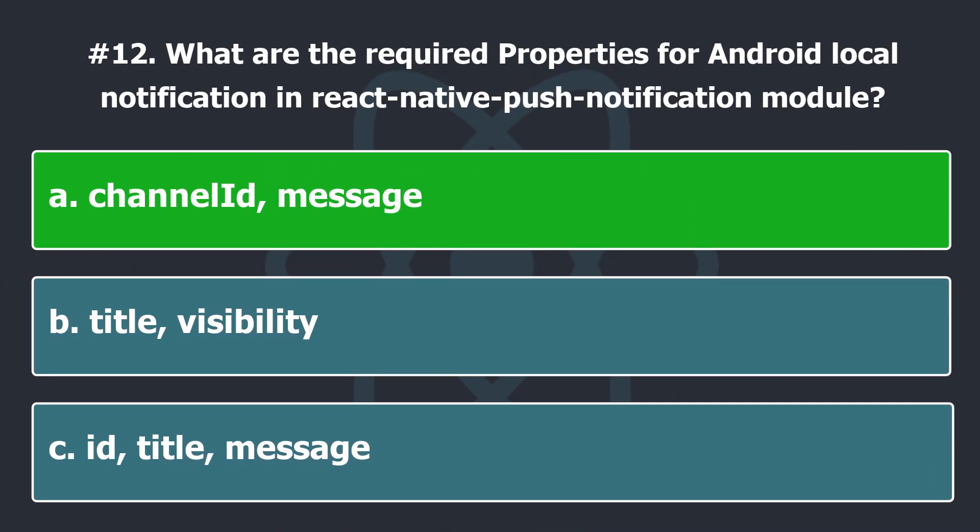Channel ID and message are required to display local notifications in Android, and the rest of the properties are optional.